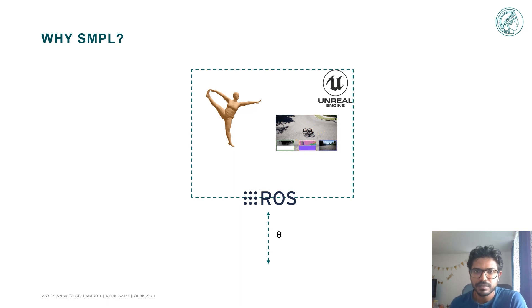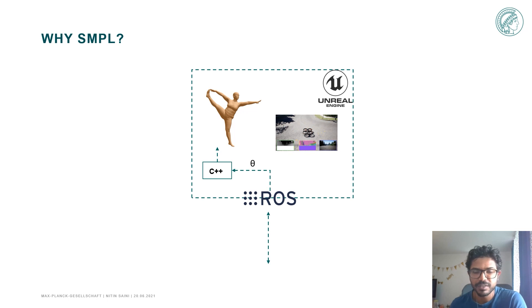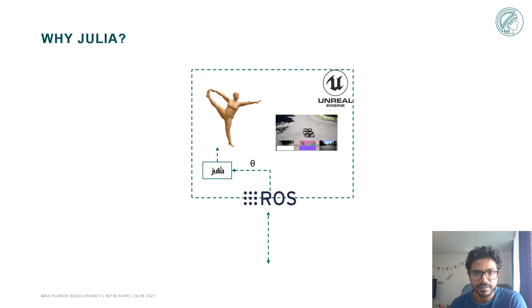The SMPL pose parameters are just 72 float values. If we need the SMPL forward pass in Unreal we need to write it in C++, and I think people will agree with me — nobody would like to write this code in C++, especially Unreal C++ which is a little different than normal C++. And that is why I used Julia for this task. Julia is concise, it is very fast, and it integrates very easily with C or C++ code.